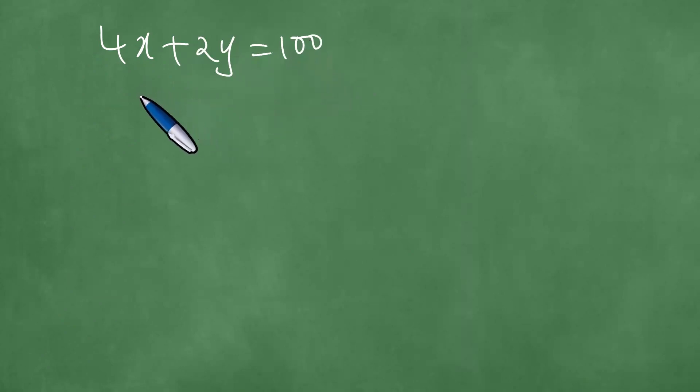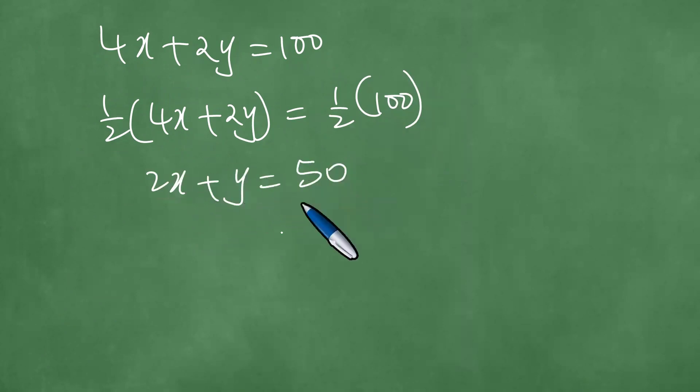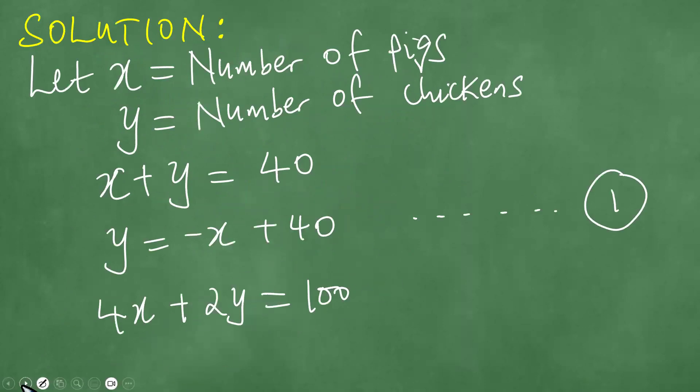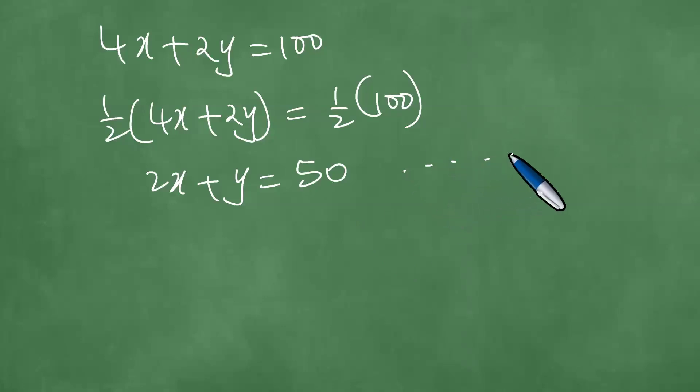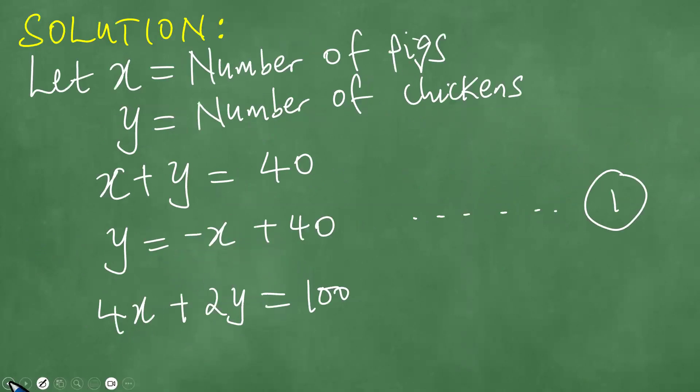And we proceed to multiply by one half both sides. And then now we have exactly this equation here. Let us call this the second algebraic equation. And we proceed to put equation one into equation two.